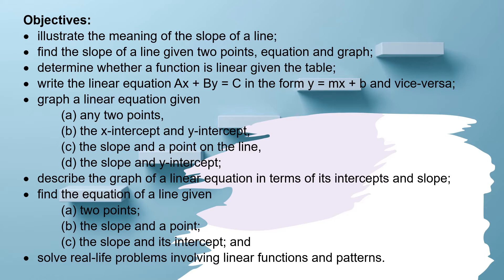Determine whether a function is linear given the table. Write the linear equation ax plus by equals c in the form y equals mx plus b and vice versa. Graph a linear equation given any two points, the x-intercept and y-intercept, the slope and a point on the line, or the slope and y-intercept.